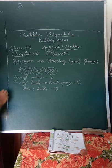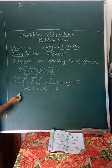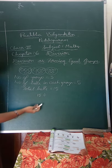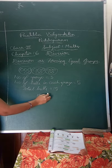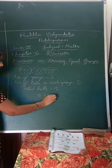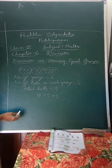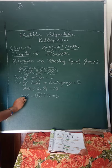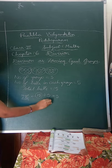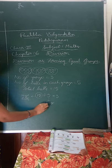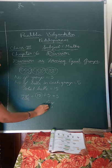This is the sharing or grouping system, but now we convert it into the division method. So: 15 divided by 5 — this is the division symbol. 15 divided by 5 equals 3. That means 15 is the number of balls, and 5 is the number of balls in each group.